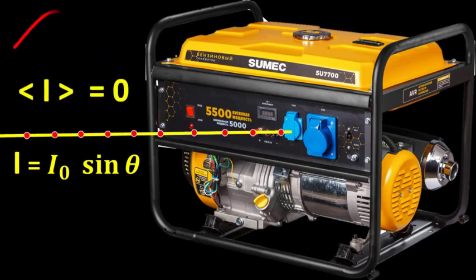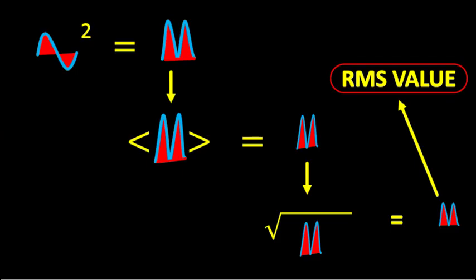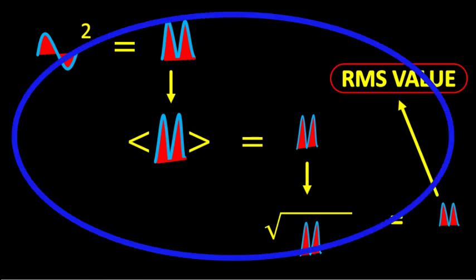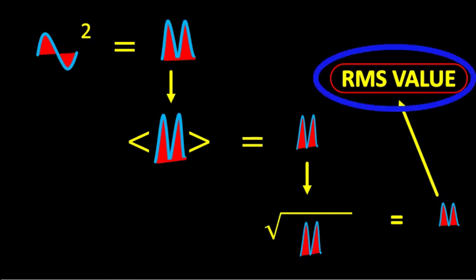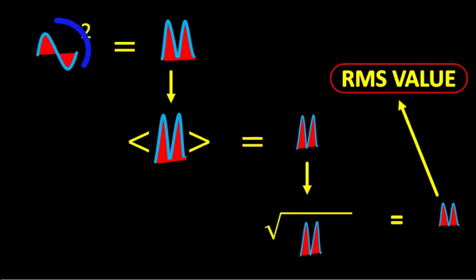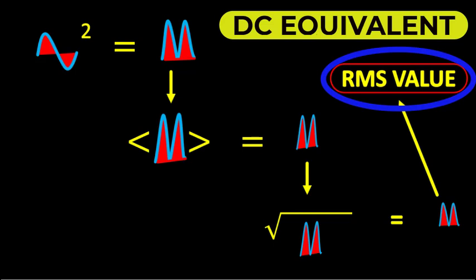We can apply an alternate approach to get the effective value of AC current over a cycle. We call it root mean square value, or DC equivalent of AC current. In short form, we call it RMS value.